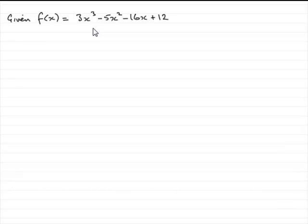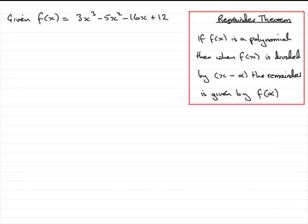To do this, you've got to be aware of something called the remainder theorem. The remainder theorem states that if you've got f of x as a polynomial — an equation that goes down in ascending powers of x — then when it's divided by x minus alpha, the remainder is given by f of alpha. So if we're dividing by x minus 2, then alpha is 2.